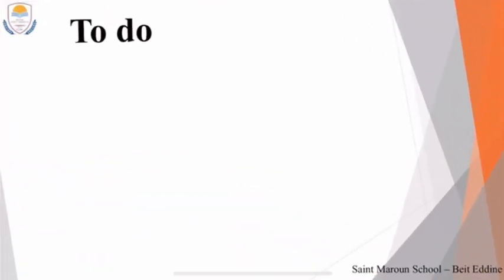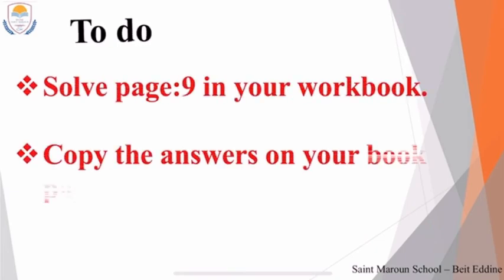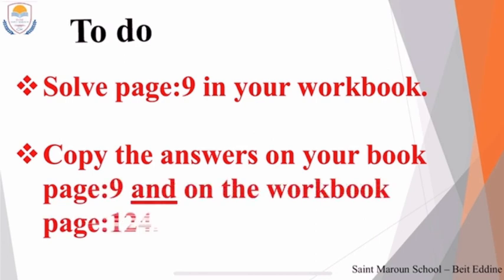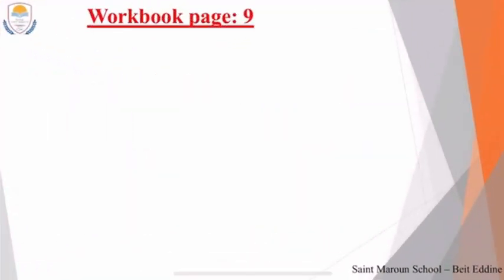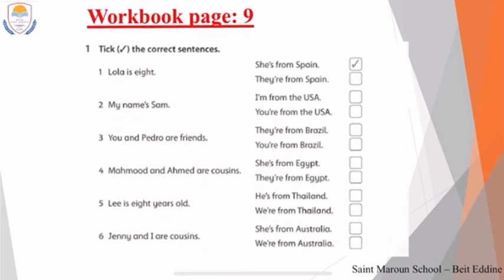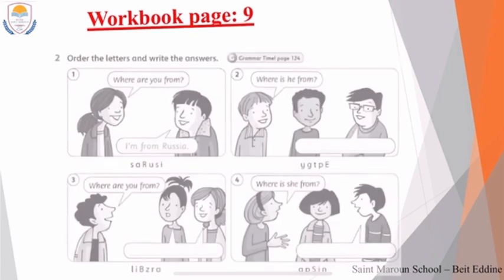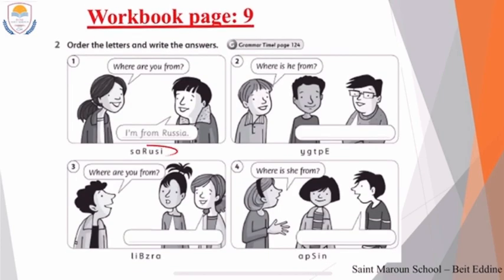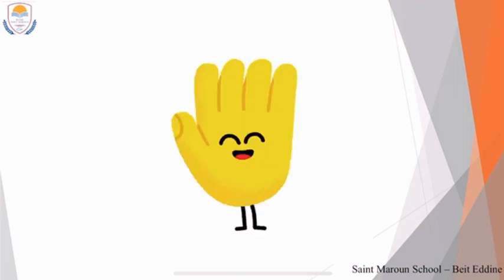So I want you, at the end, to solve page nine in your workbook, then copy the answers that we solved today on your book page nine and on the workbook page 124. Don't forget to send me your homework. In the homework page nine, you have to tick the correct answers — just tick. And in number two, you have to use the letters and organize or order them to write the answer. That's all. See you next time. Bye-bye!